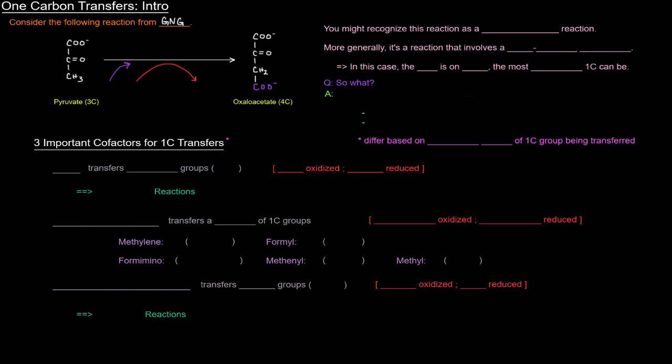basically pyruvate had a carboxyl group added to it to get this oxaloacetate. And that carboxyl group came from carbon dioxide, and this reaction requires ATP, and it's catalyzed by pyruvate carboxylase.